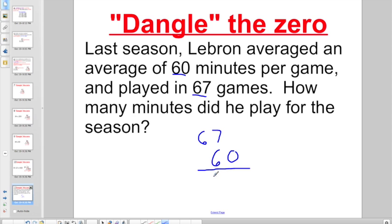6 times 7 is 42. So, I'm going to write down my 2. I'm going to carry my 4. 6 times 6 is 36. Plus 4 more. That's 40. And my last step is to go and dangle my 0 and bring it straight down. 4,020 minutes was the total number LeBron played that season.